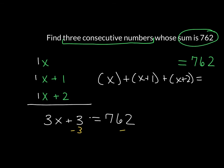From here, you just solve the equation. I subtract 3 from both sides. And then I'm left with 3x is equal to 759. I divide both sides by 3. And that tells me my first value of x is 253.